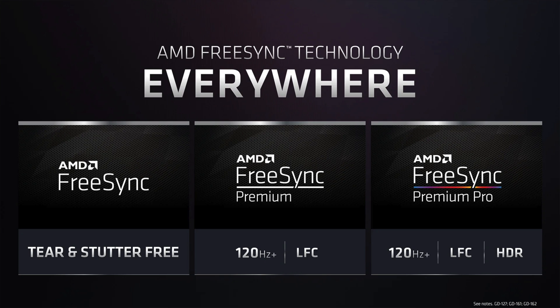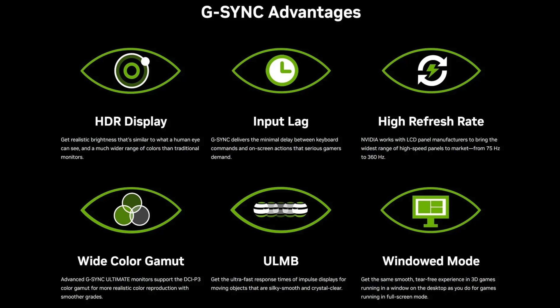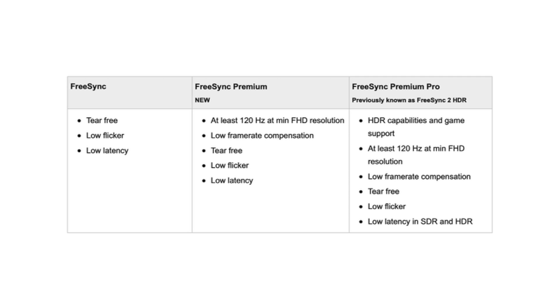Both AMD and Nvidia have multiple tiers for their adaptive sync technologies. With AMD you have FreeSync, FreeSync Premium, and FreeSync Premium Pro. With G-Sync you have G-Sync Compatible, G-Sync, and G-Sync Ultimate. I'll leave links in the description with a chart showing what each tier offers. At the top tier — G-Sync Ultimate — you get guarantees like color testing, HDR with 1000 nits of peak brightness, and other certified standards. FreeSync Premium Pro similarly guarantees at least a 120Hz refresh rate, 4K or higher resolution, and a number of other standards that must be met.